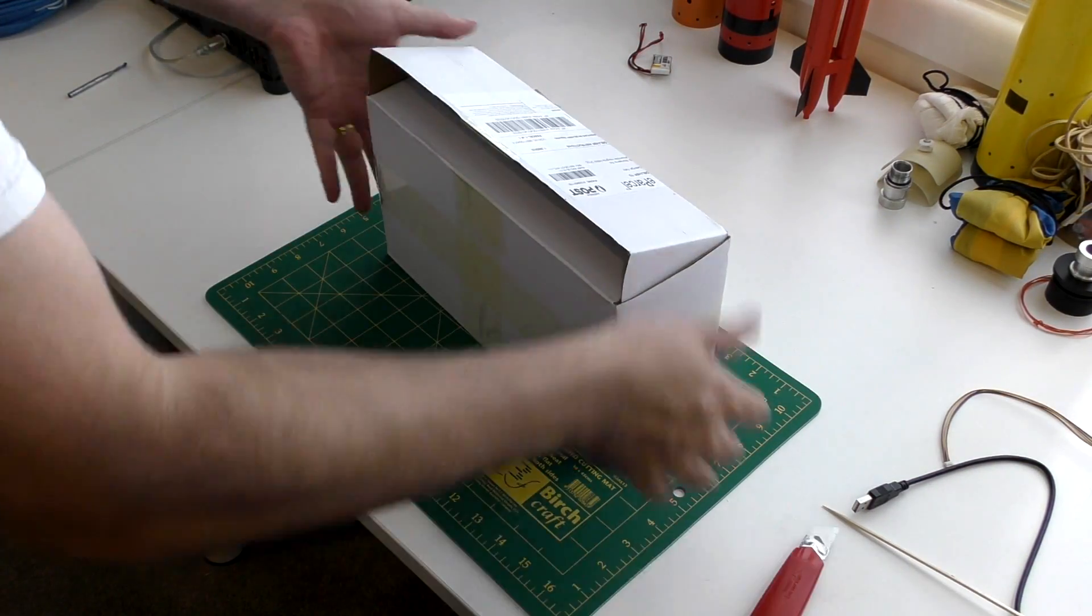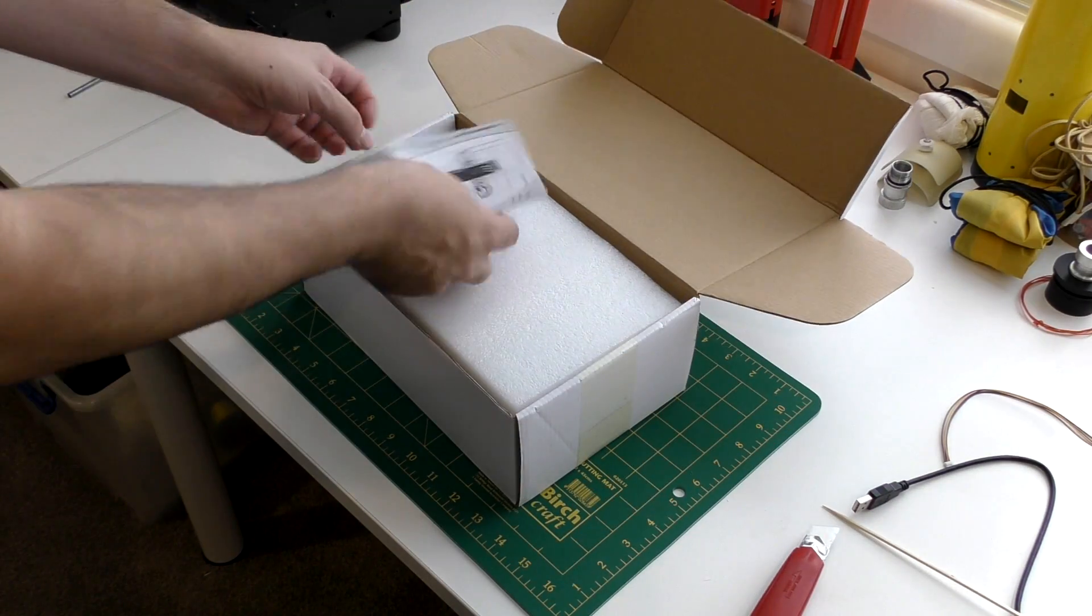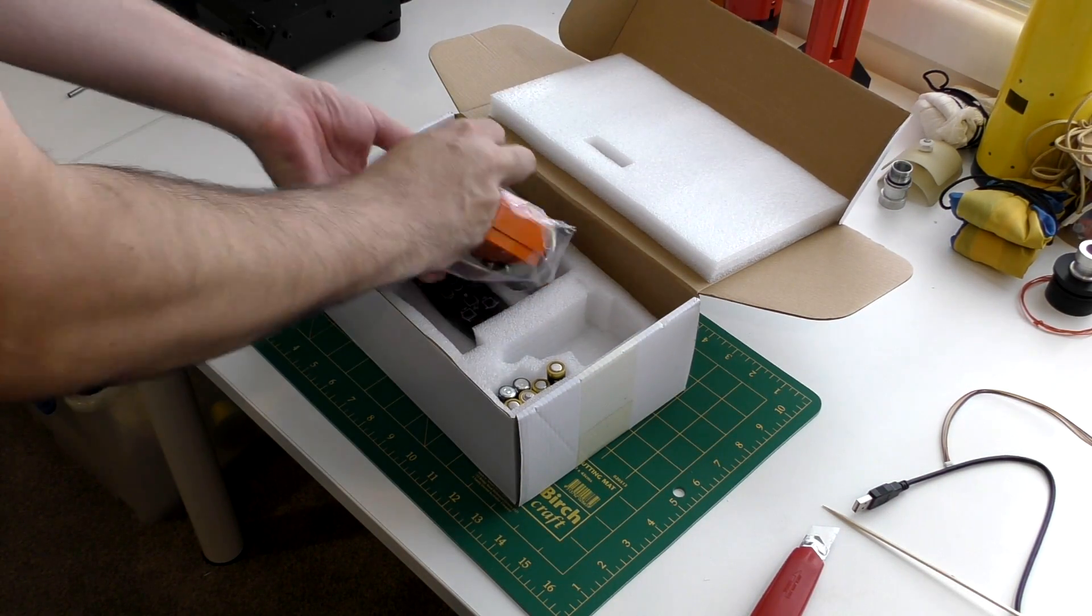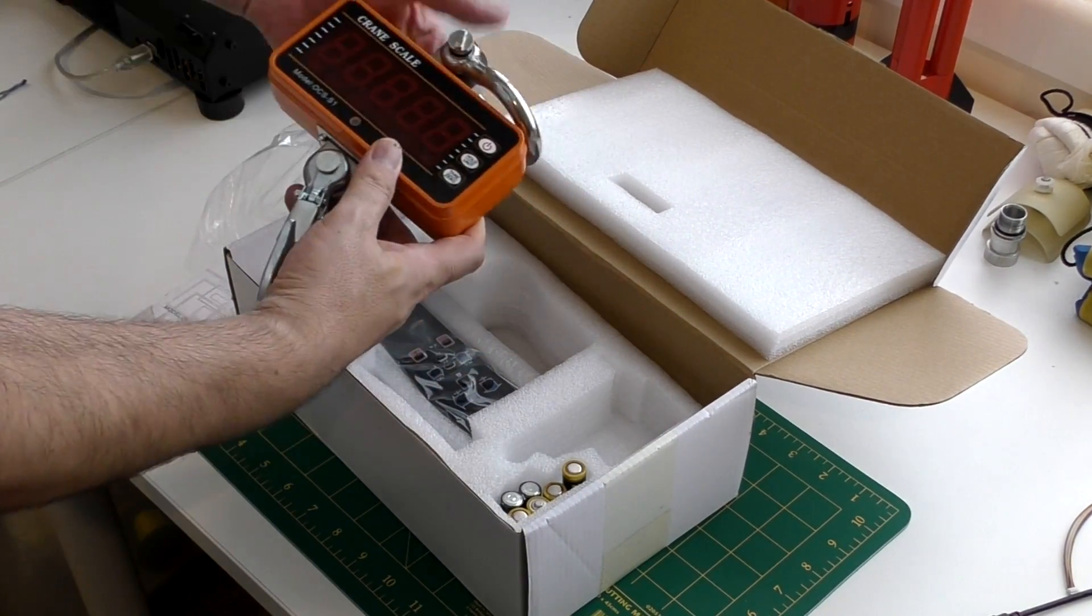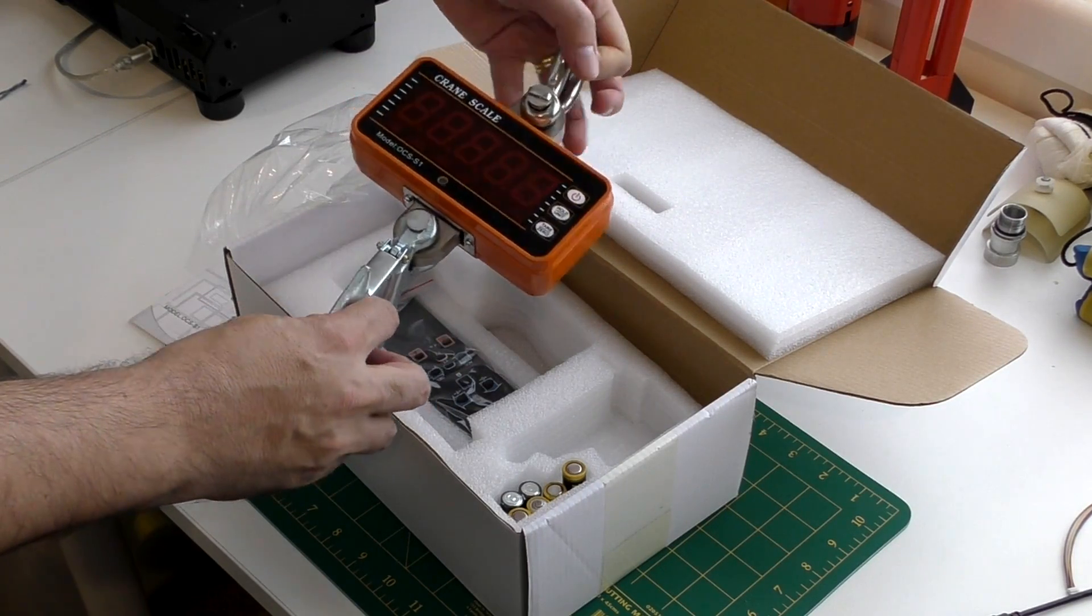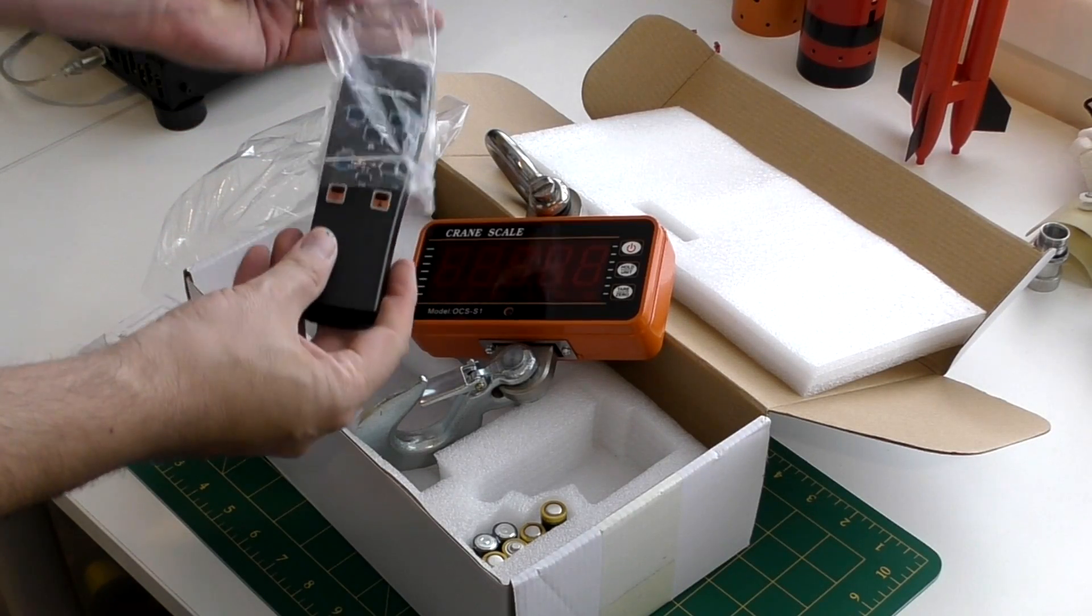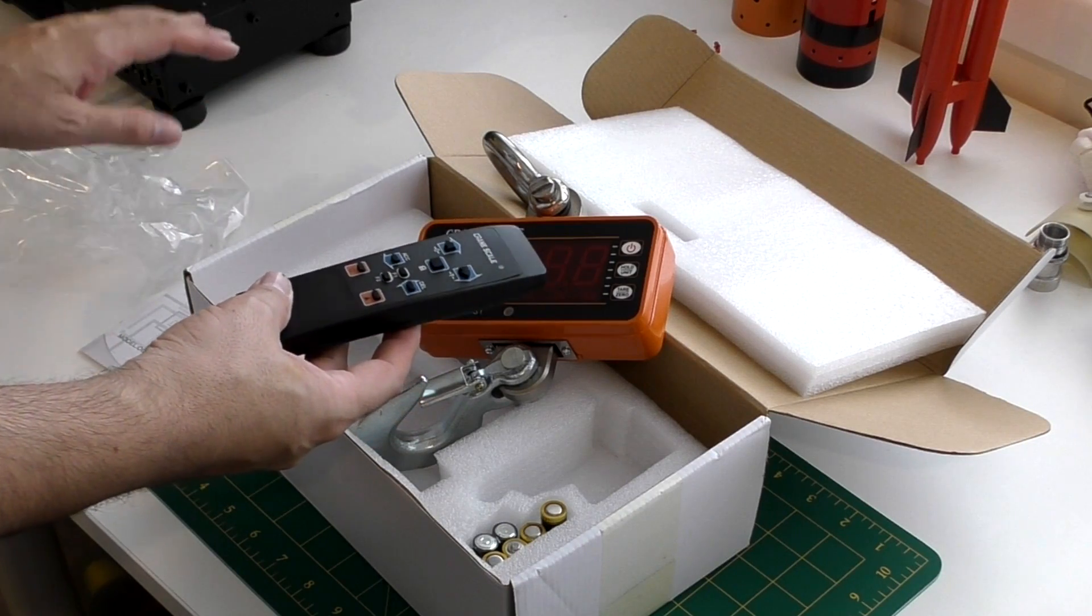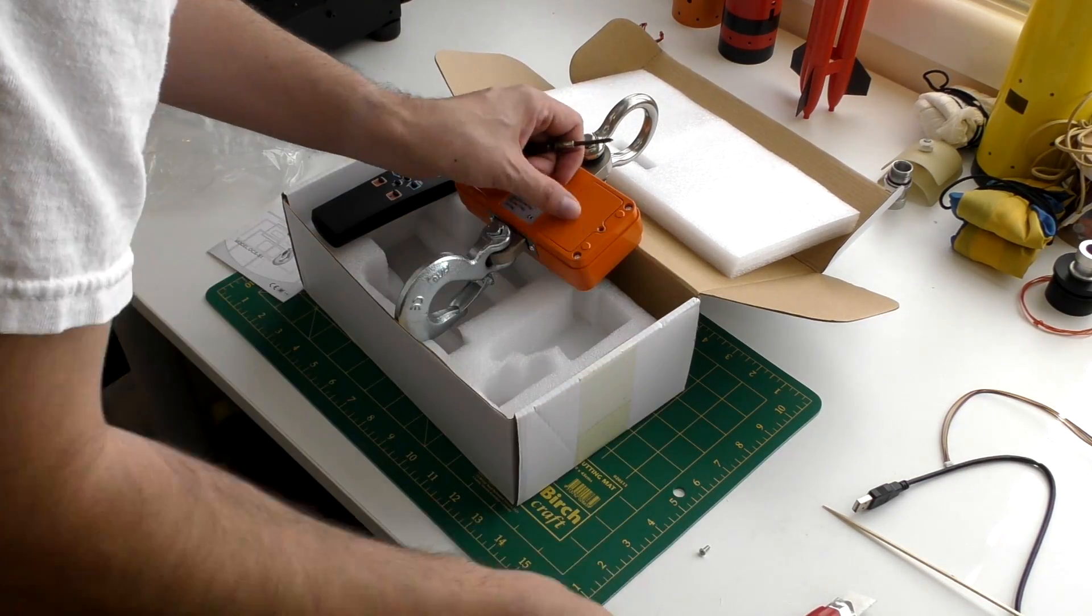The scale in this case is a one-ton crane scale we bought on eBay for around 90 dollars. It's quite a nice unit and even comes with a remote control. It runs off four double-A batteries.